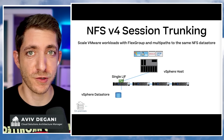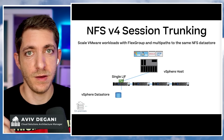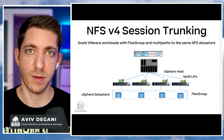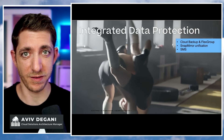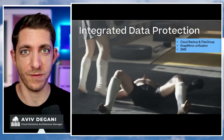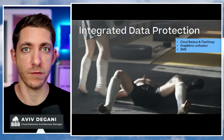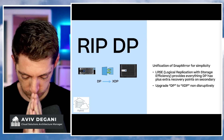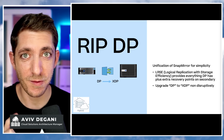If you're using NFS version 4, you can now enjoy session trunking, which basically means you have multi-path for NFS from different NICs to the same volume. Data protection — which is usually a very boring subject — but now ONTAP is making it very interesting with some core features and capabilities. And we'll start with a moment of silence for DP. We don't need you anymore DP — we have XDP.